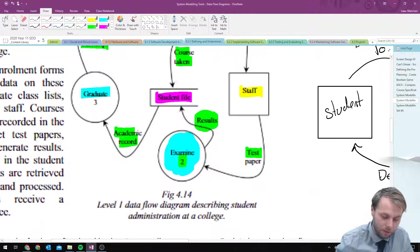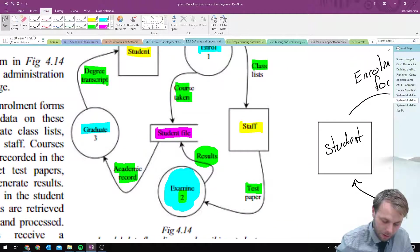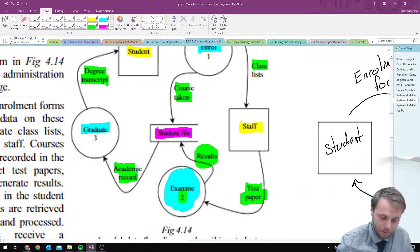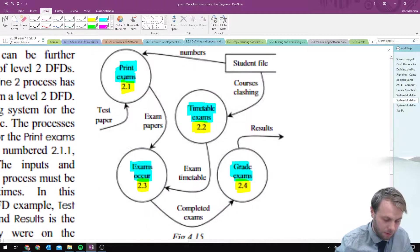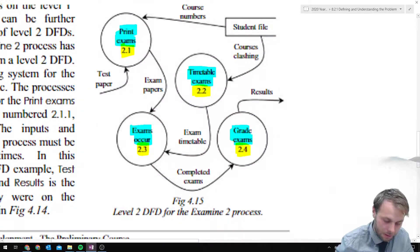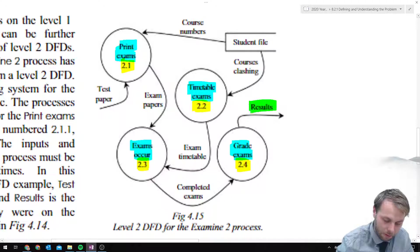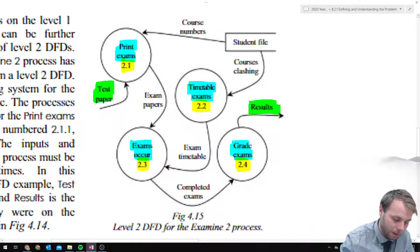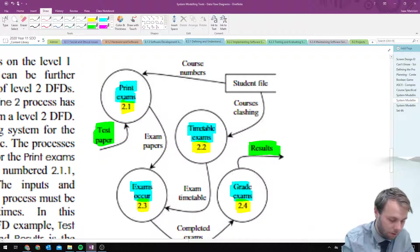If we go back to our level 1 data flow diagram, we can see the test paper coming in and the results coming out, so we need to make sure that they're included on our level 2. And we can see on the right-hand side the results leaving our level 2 data flow diagram, and on the left-hand side the test paper coming into our level 2 data flow diagram.